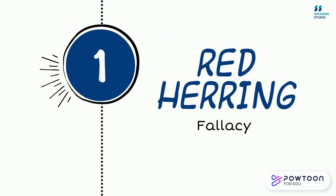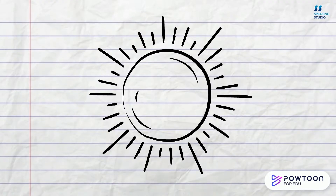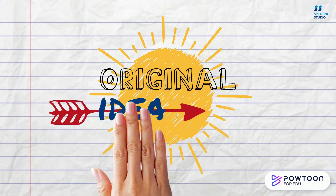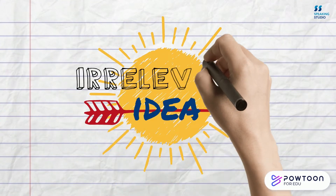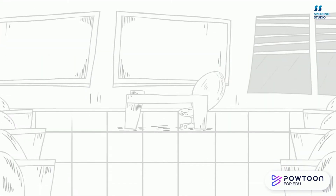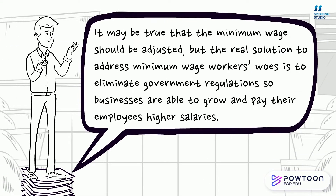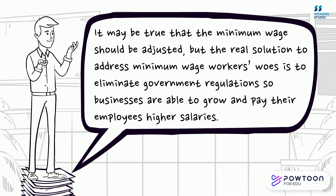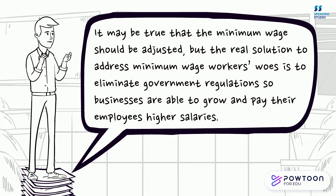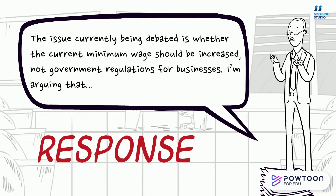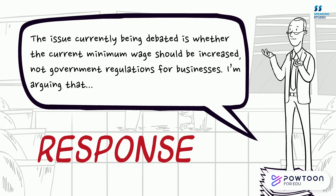First up is the red herring fallacy. This is an argument that changes the subject and thereby distracts the audience by putting the focus on something else. It may be true that the minimum wage should be adjusted, but the real solution to address minimum wage workers' woes is to eliminate government regulations so businesses are able to grow and pay their employees higher salaries. The issue currently being debated is whether the current minimum wage should be increased, not government regulations for businesses.